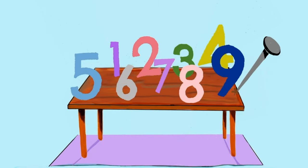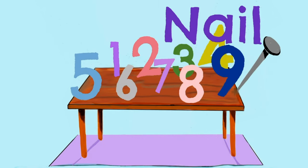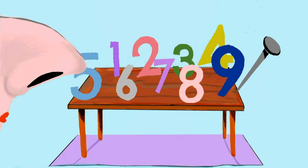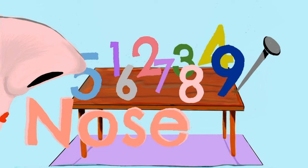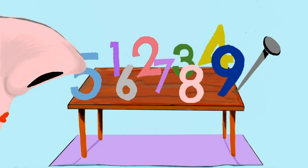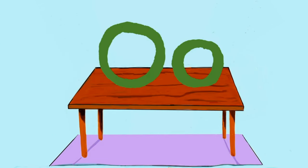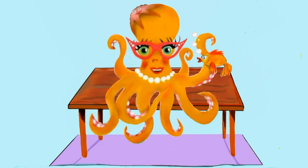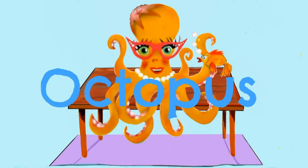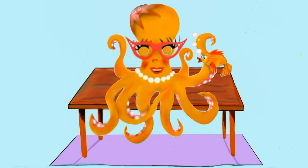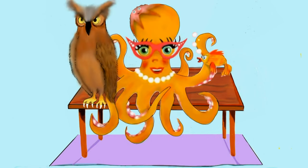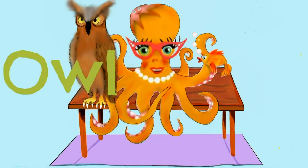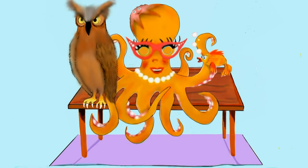Those are numbers. And that's a nail. And someone's nose — get your nose out of the frame! Next we have the letter O — my friend Octavia the octopus, with an owl and an orange.